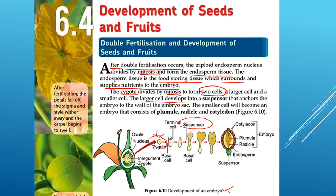The suspensor anchors the embryo to the wall of the embryo sac — it helps with attachment. The smaller cell will become the embryo, which consists of the cotyledon, the plumule, and the radicle.